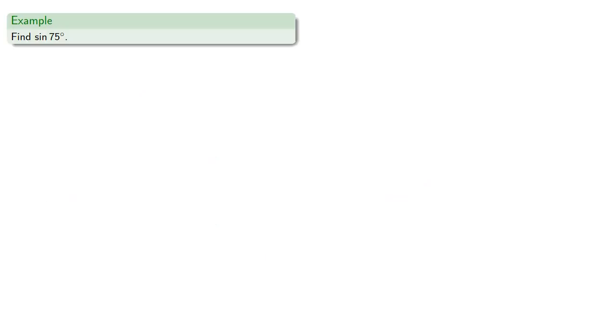So, for example, let's find the sine of 75 degrees, and we know that 75 degrees can be rewritten as the sum of 30 and 45, and here's the important thing. We know the sine and cosine of 30 and 45.